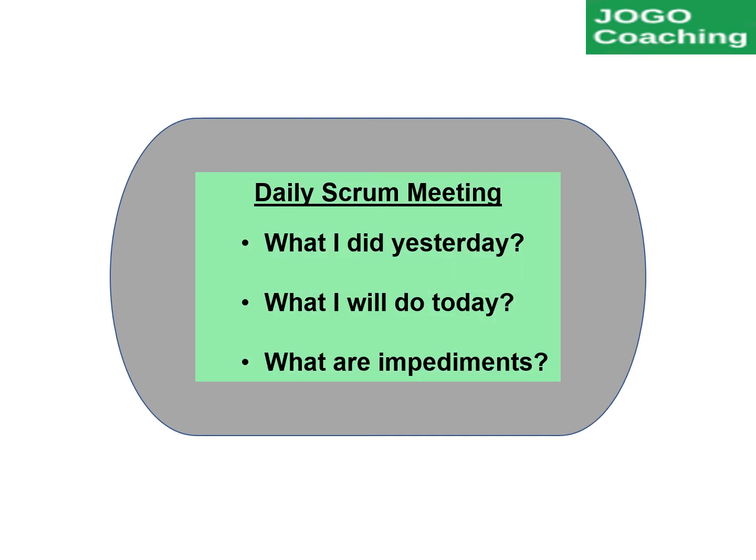The next event is the daily Scrum meeting. This meeting will happen once every 24 hours. All development team members will participate, and the Scrum Master will facilitate it. Each team member will answer the following three questions: what did they do yesterday, what will they do today, and are there any impediments that need help or attention from others.